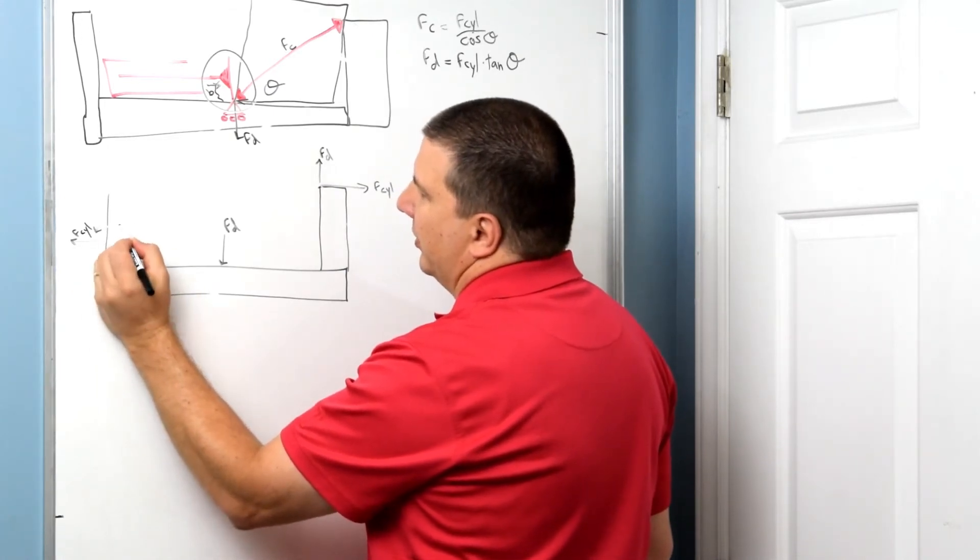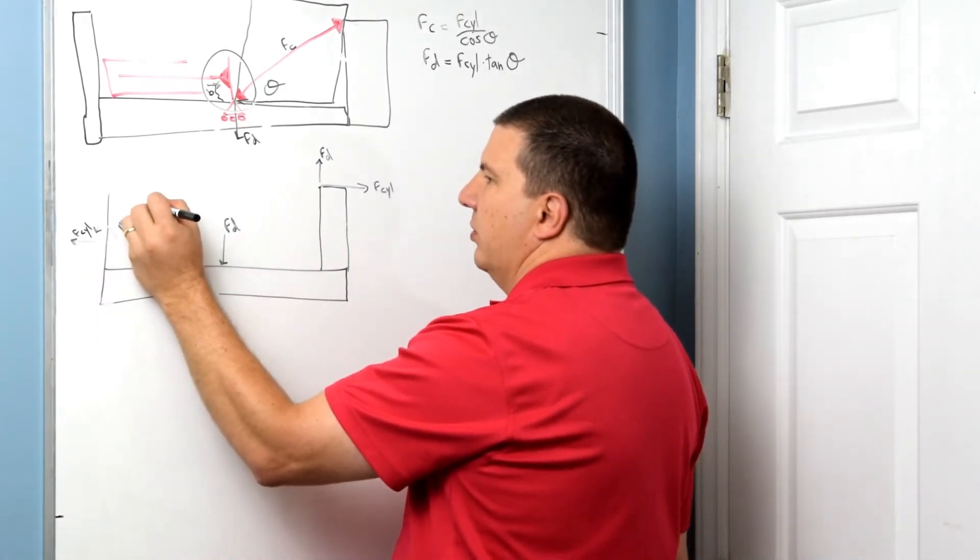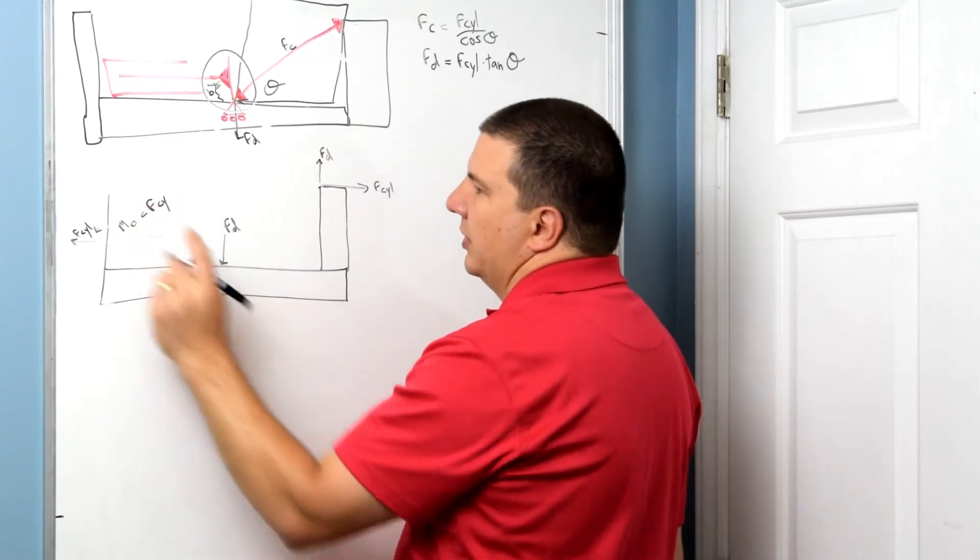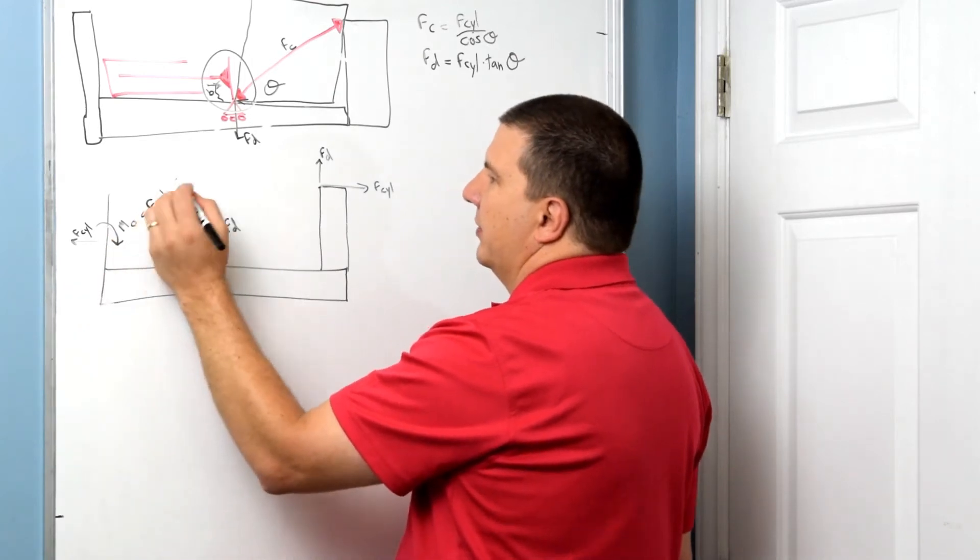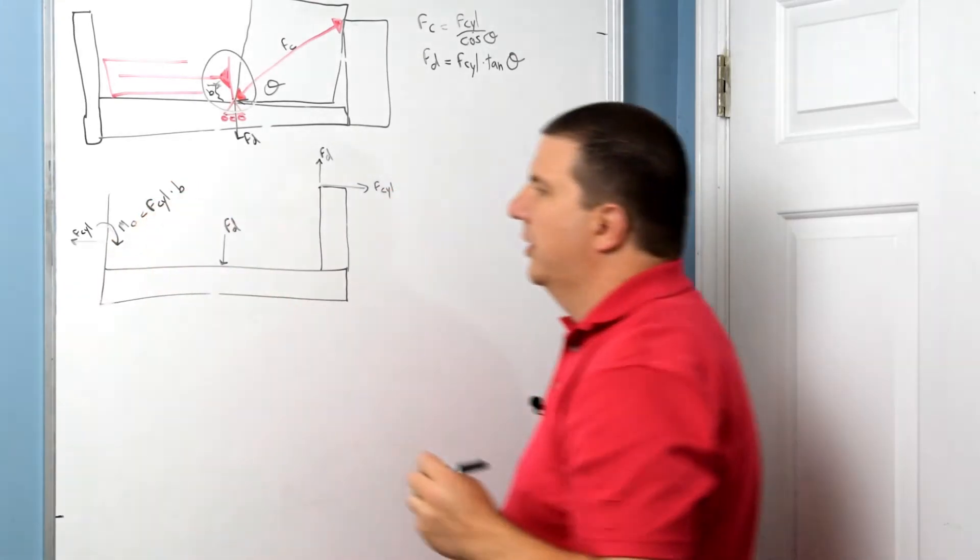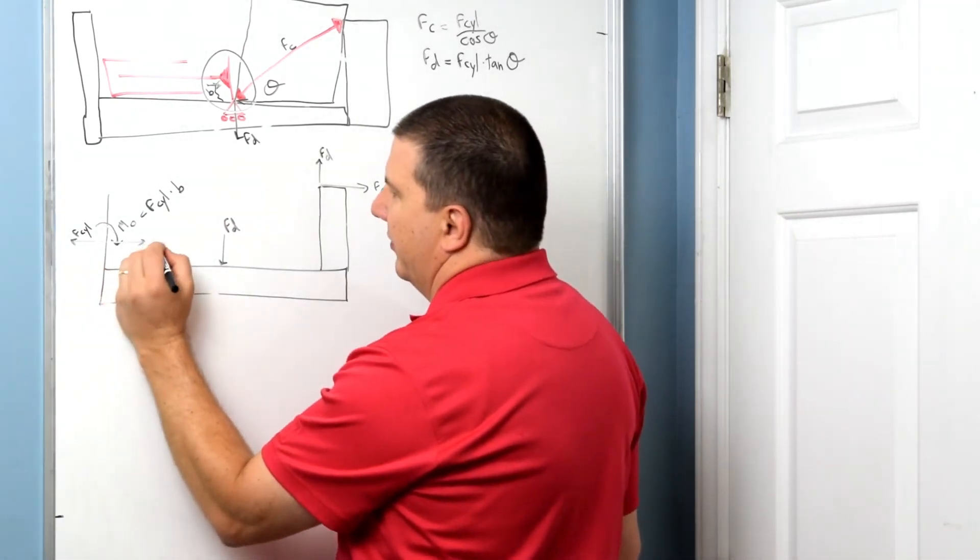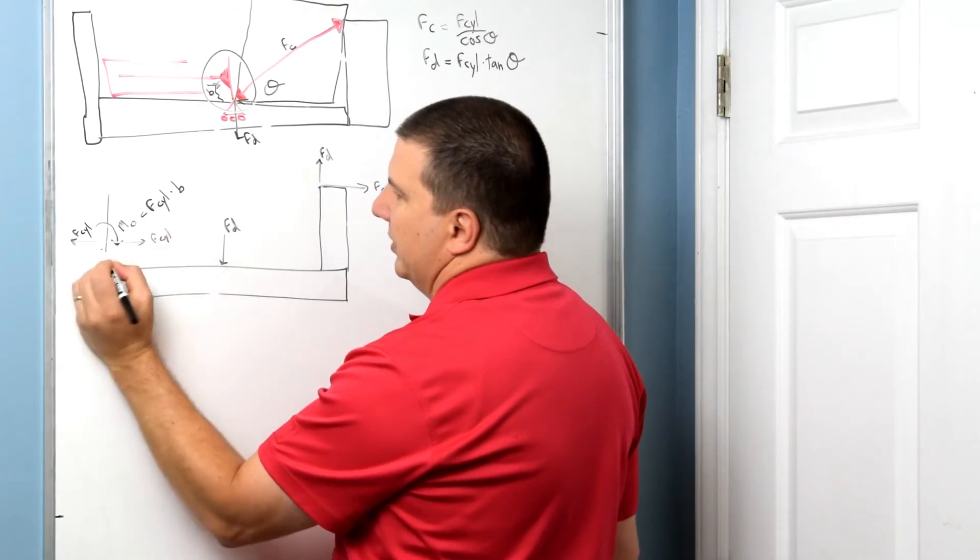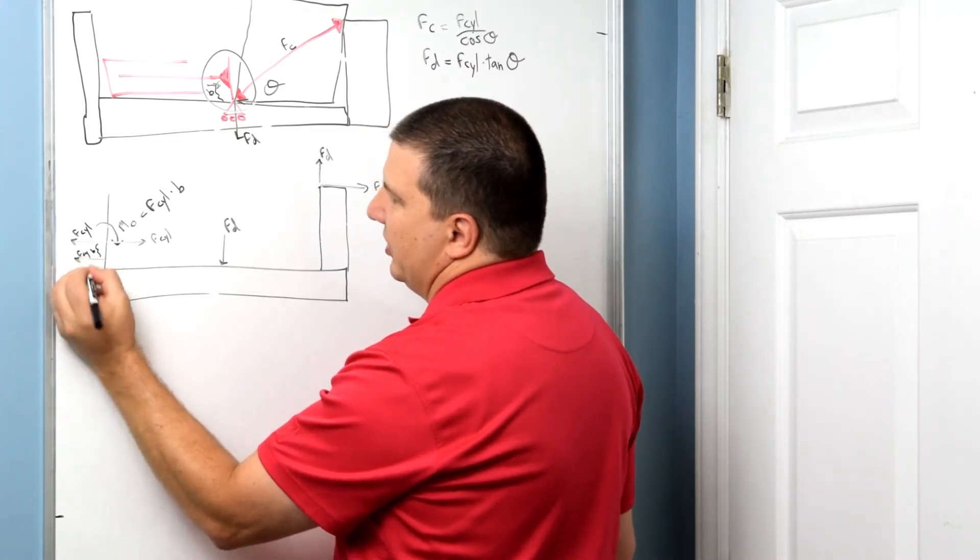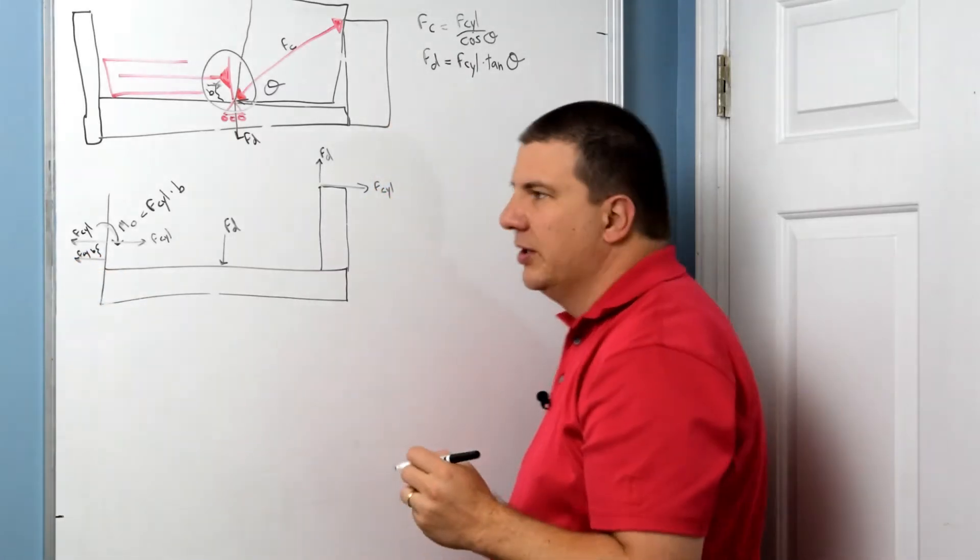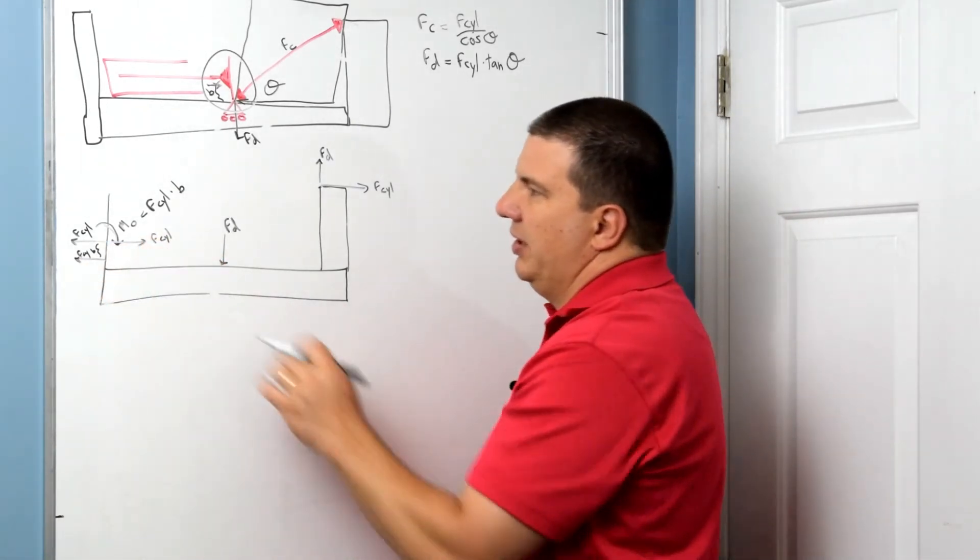a moment here. And I'm going to call this the offset moment. All right, and that's just going to equal force of the cylinder. I'm sorry, I drew the sign of that wrong. It's going to be going this way. Okay. Times B. All right. If we wanted to look at that, it would be force of the cylinder and then force of the cylinder. And this would be the dimension B. All right. So that's how we could draw it here as well. So these two separated by B equals this.